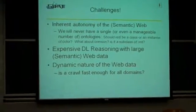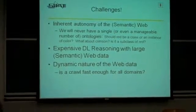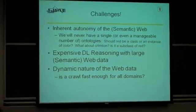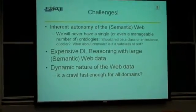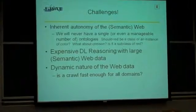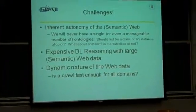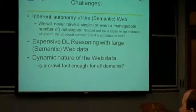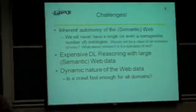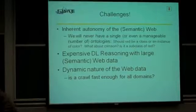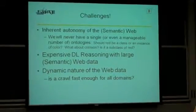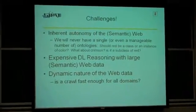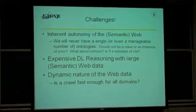Whether classification — whether crimson is a subclass of red or whatnot — it's very hard for people to agree on things. And an ontology is an unambiguous, generally accepted domain description, so you would have a harder time doing that.